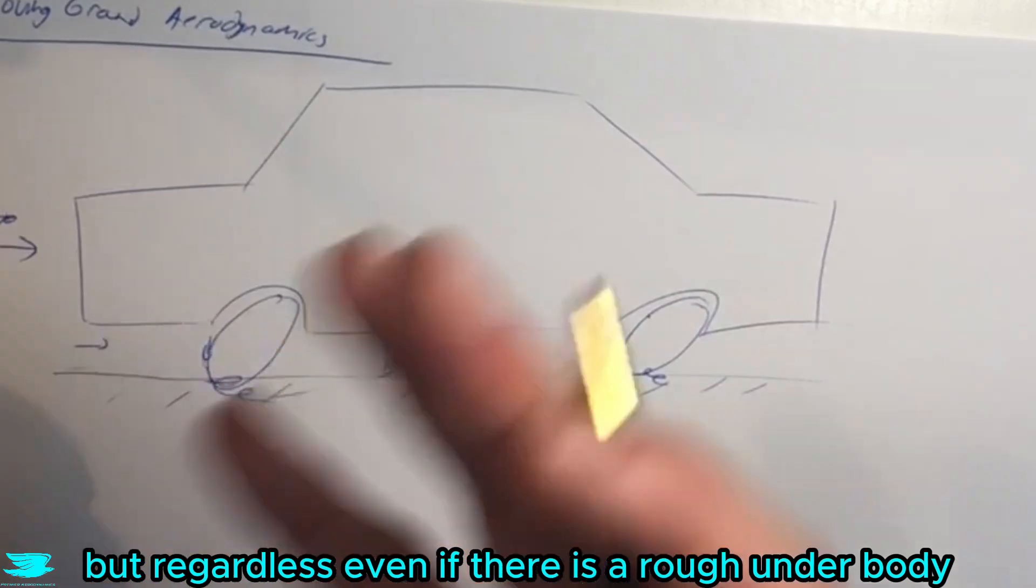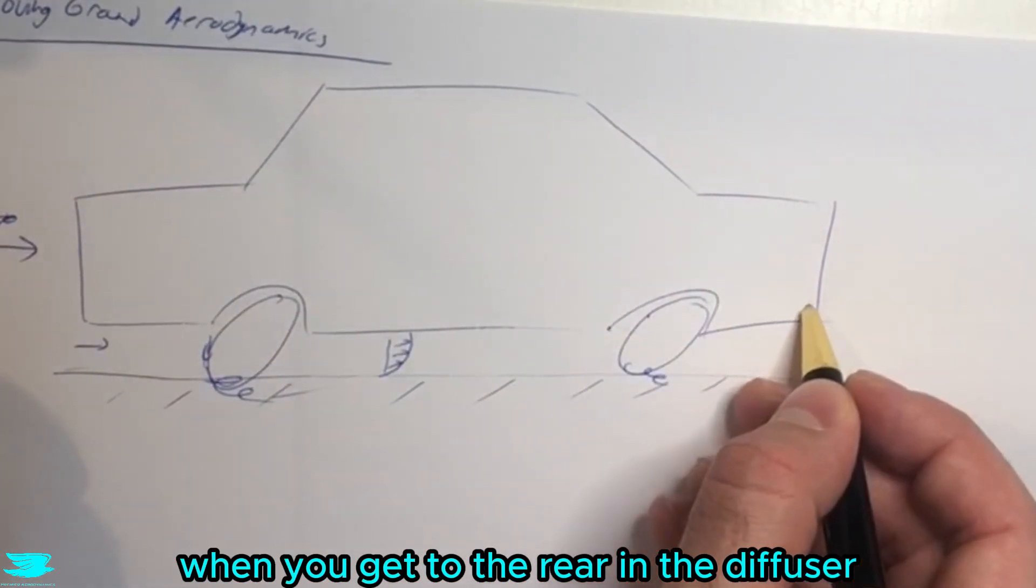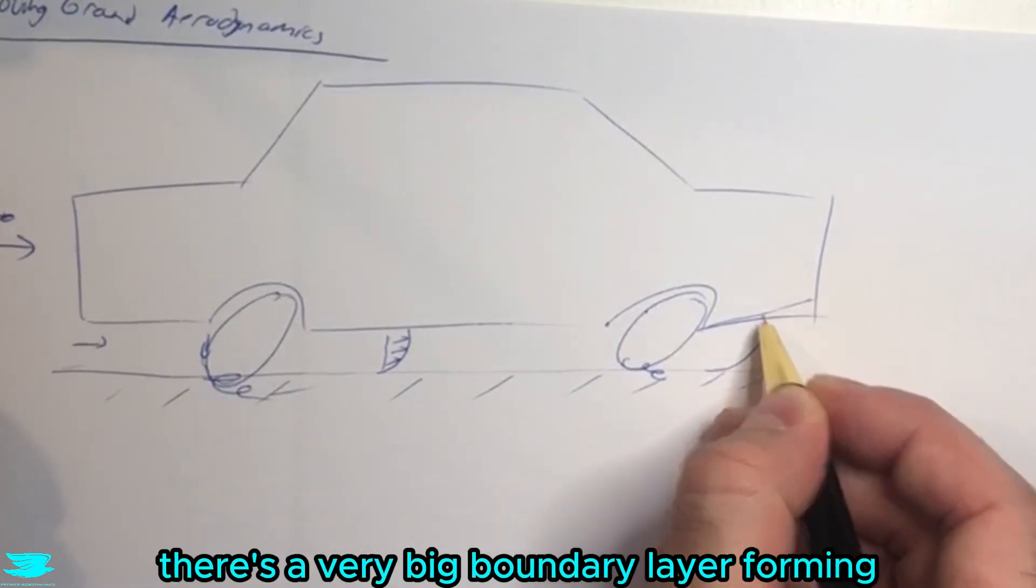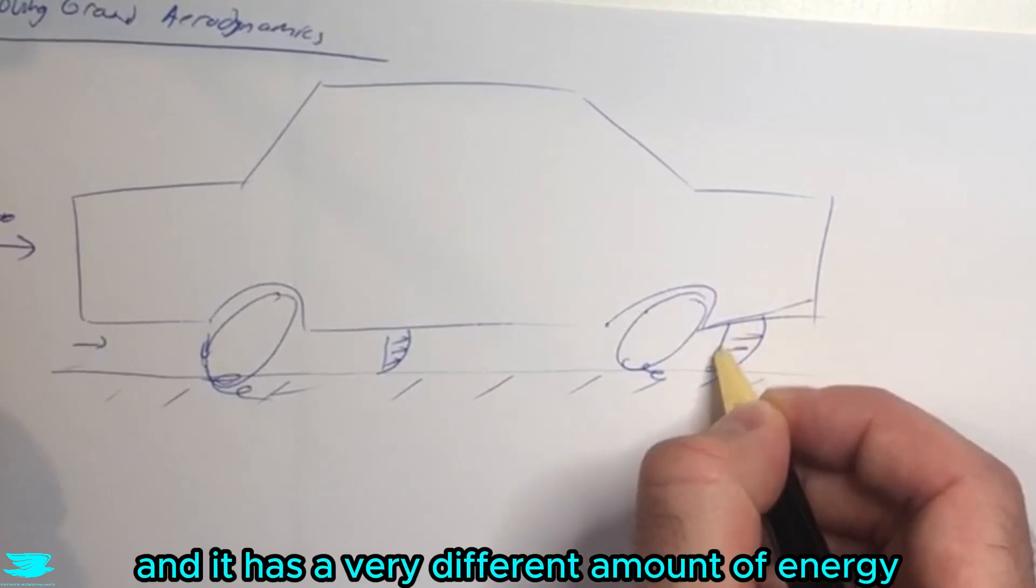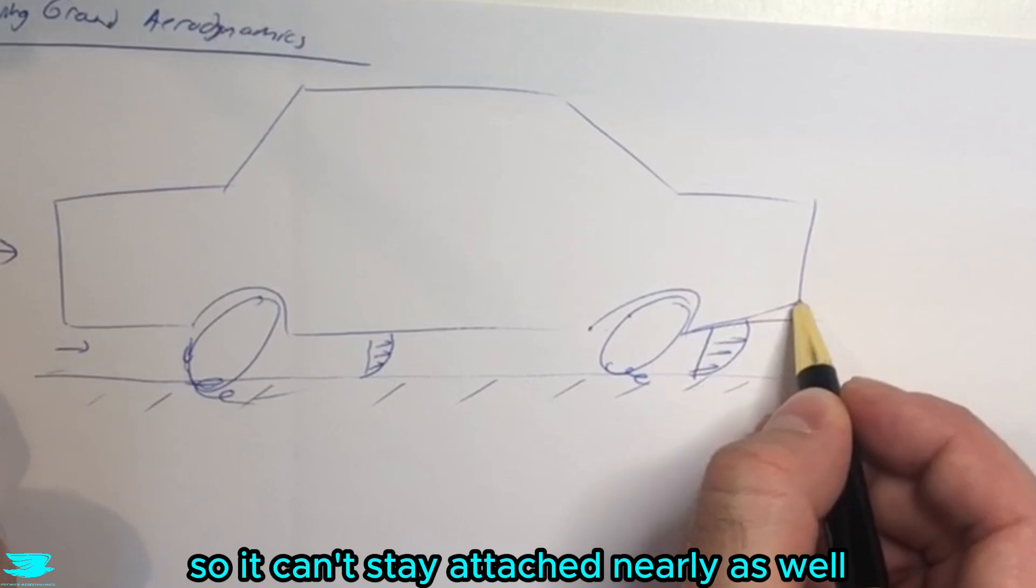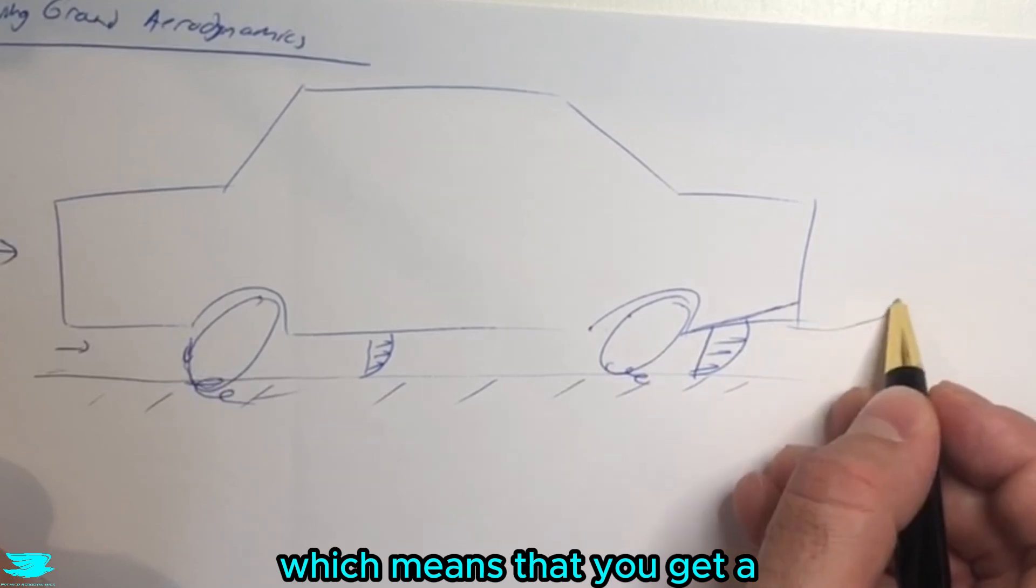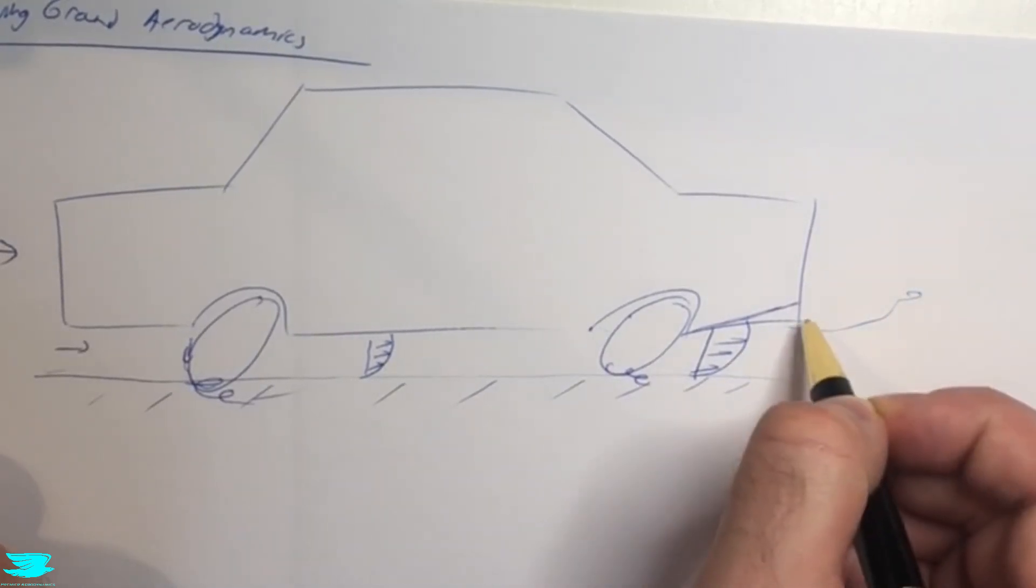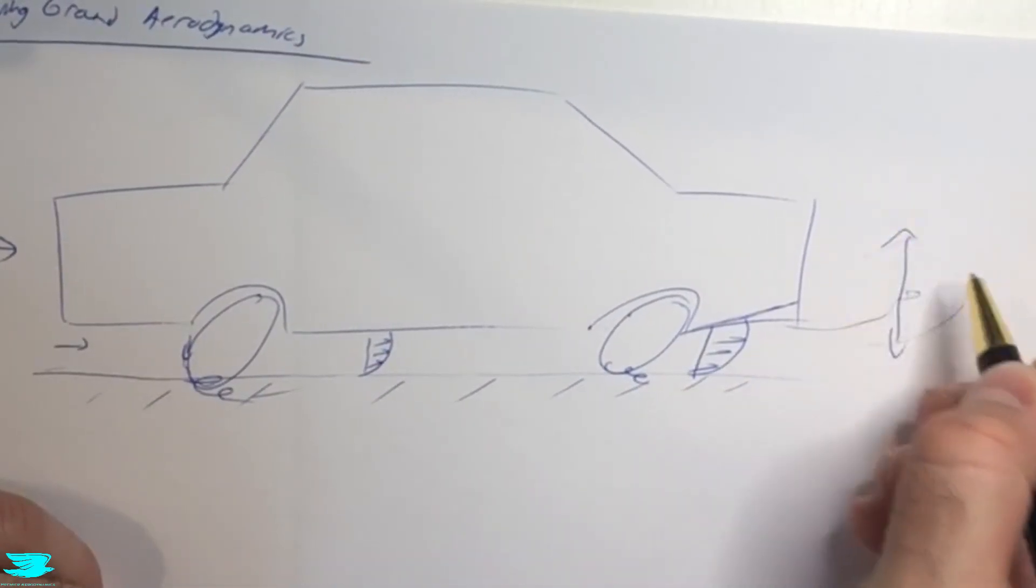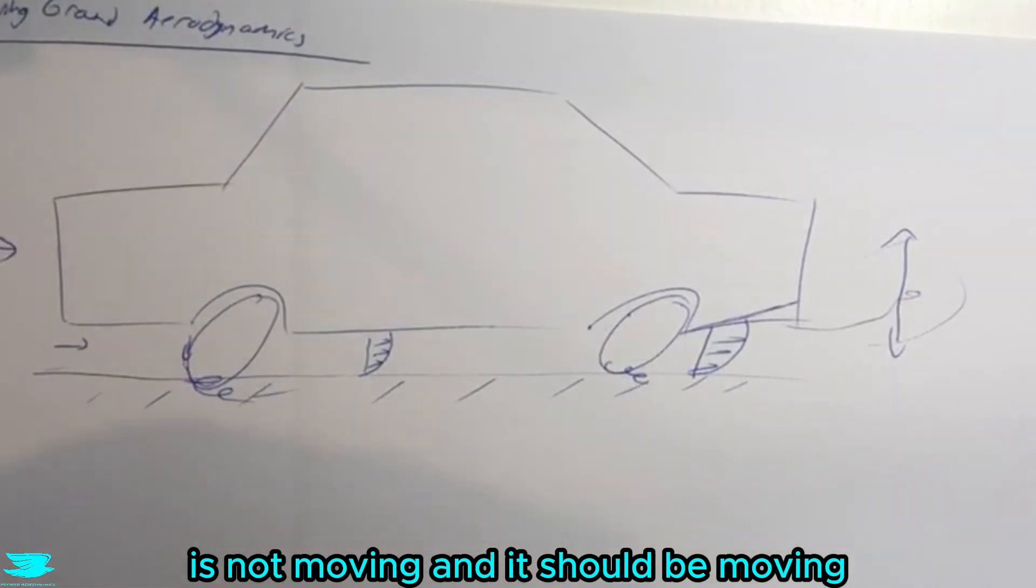Regardless, even if there is a rough underbody or not, when you get to the rear here in the diffuser, the diffuser will definitely act very differently because the flow here has a very big boundary layer forming with a very different amount of energy. It can't stay attached nearly as well over this diffuser. Usually you'll get more separation, which means you get a greater wake. The recirculation zone around here is different - it's usually moved down and usually bigger.